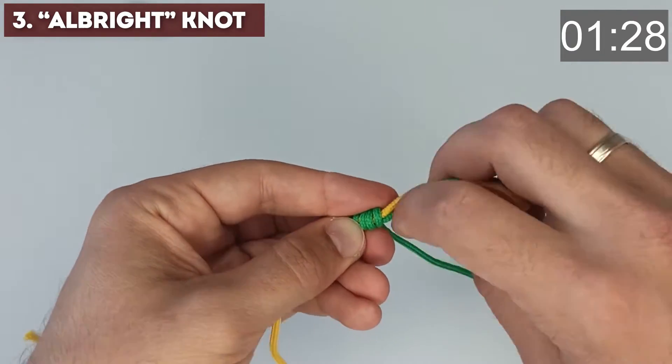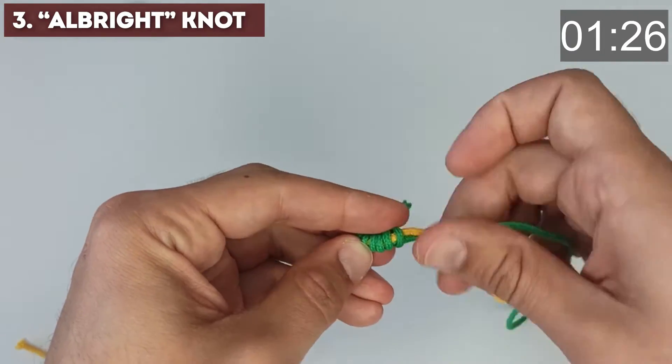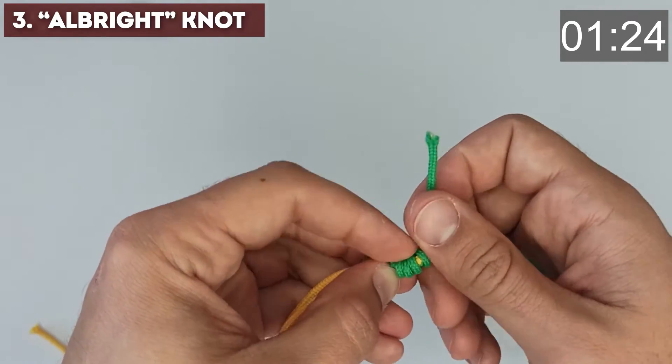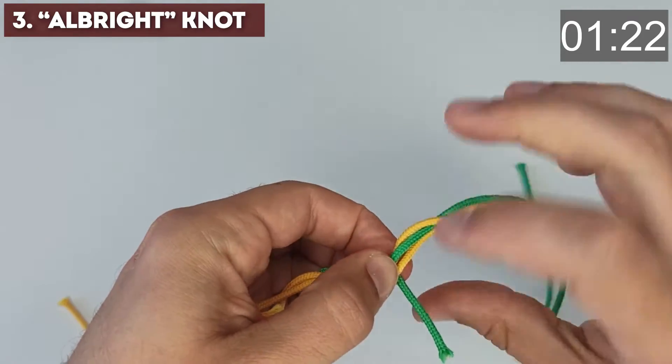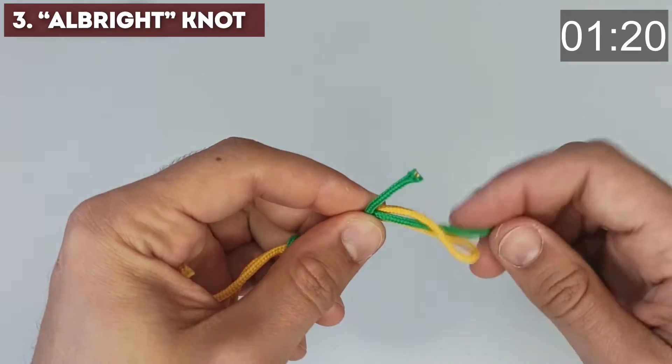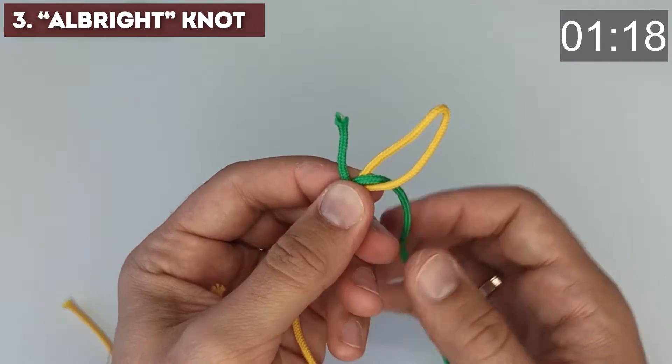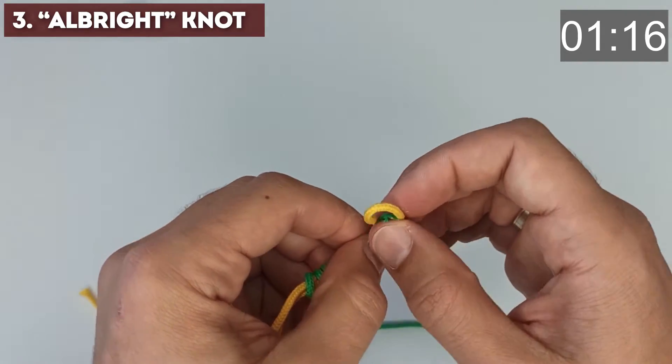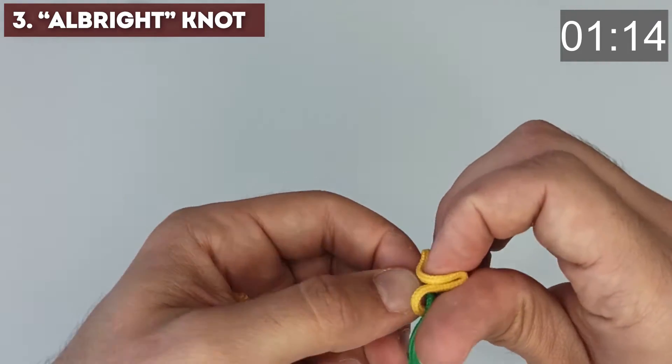Make about 12 turns and thread the working end of the cord through the line loop.